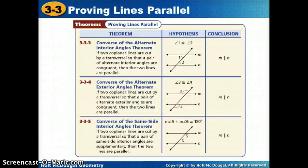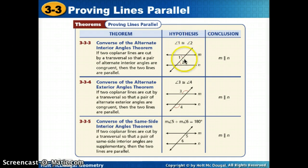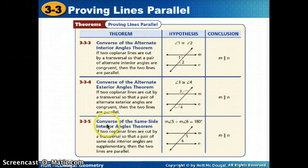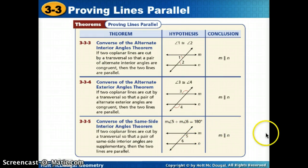We also have the converse of our other three theorems, where we switch their hypothesis and conclusion. They're all pretty much the same idea. If I have alternate interior angles that are congruent, then I can say the lines are parallel. The converse of alternate exterior: if I have alternate exterior angles congruent, then the lines are parallel. Or with same side interior angles, the converse says if the same side interior angles are supplementary, then our lines also have to be parallel.